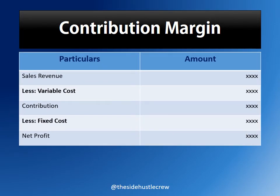This given profit chart will help us understand the chronology better. We start with the sales revenue. From sales revenue we subtract the variable costs — those costs which change with the level of production. Upon subtracting variable cost from the sales revenue we get the contribution margin. From the contribution margin we subtract the fixed cost to arrive at the net profit.